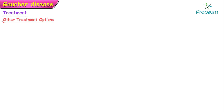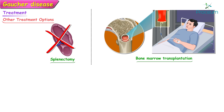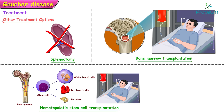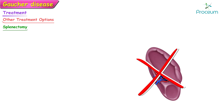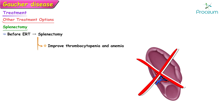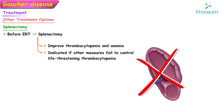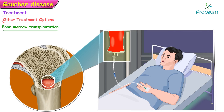Other treatment options include splenectomy, bone marrow transplantation, hematopoietic stem cell transplantation, and novel gene therapies. The availability of enzyme replacement therapy has limited indications for splenectomy; splenectomy is now indicated only if other measures fail to control life-threatening thrombocytopenia in patients with Gaucher's disease.